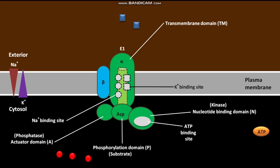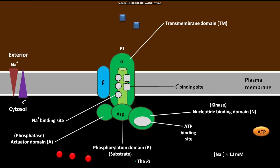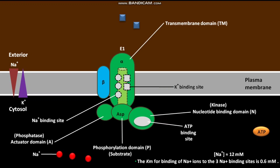In the E1 conformation, the three high-affinity Na+ binding sites and two low-affinity K+ binding sites located in the membrane-spanning domain face the cytosol. The intracellular Na+ concentration is approximately 12 mM, while the Km for Na+ binding to the three sites is 0.6 mM. Since the Km is lower than the intracellular Na+ concentration, three Na+ ions bind to the three Na+ binding sites.